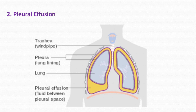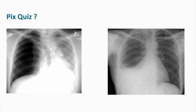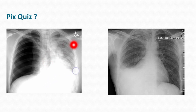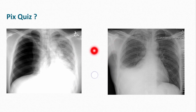There are two X-rays in front of you — one on the right side and one on the left side. Can you please tell me which of these X-rays shows pleural effusion and which shows pneumothorax? You can give your answer in the comment section. Thank you for watching this video. Allah Hafiz.